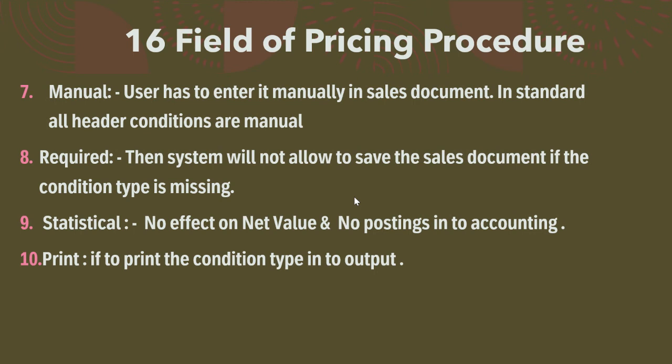The ninth field is Statistical. If a condition type is marked as statistical, it has two effects: first, there is no effect on the net value; and second, there are no accounting postings made for that condition type.